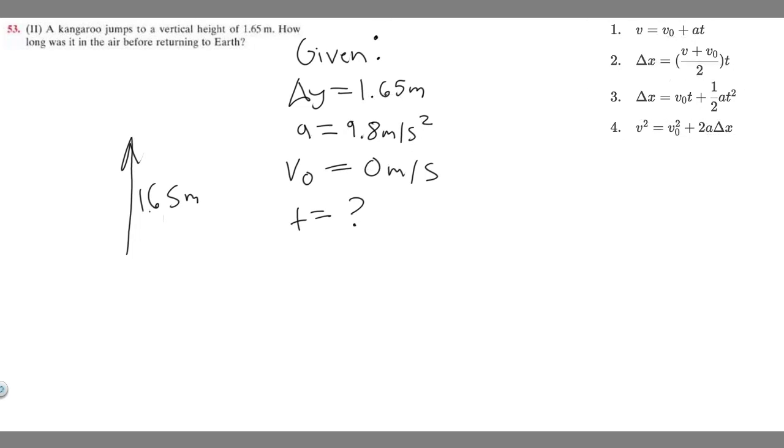So we know delta x, in this case delta y, is going to be 1.65, which equals v sub zero which is zero times t, which is just going to be zero t. So it's just going to be one half times a which is 9.8 times t squared. So 9.8 times one half is just 9.8 divided by 2 which is 4.9 times t squared.